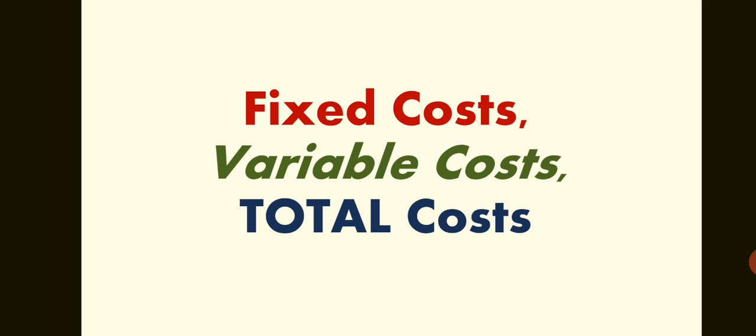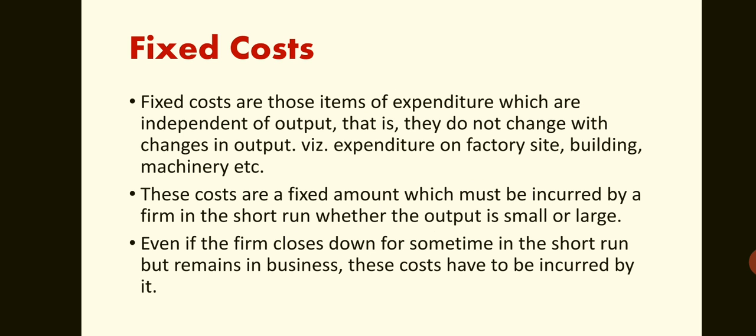So today we are going to start Fixed Cost, Variable Cost, and Total Cost. Let us start with the meaning of Fixed Cost. Fixed costs are those items of expenditure which are independent of output — that is, they do not change with changes in output. Expenditure on factory site, building, machinery, etc. Fixed cost means it remains unchanged with the increase in output. However much you increase production, fixed cost remains unchanged. The nature of the cost is fixed.